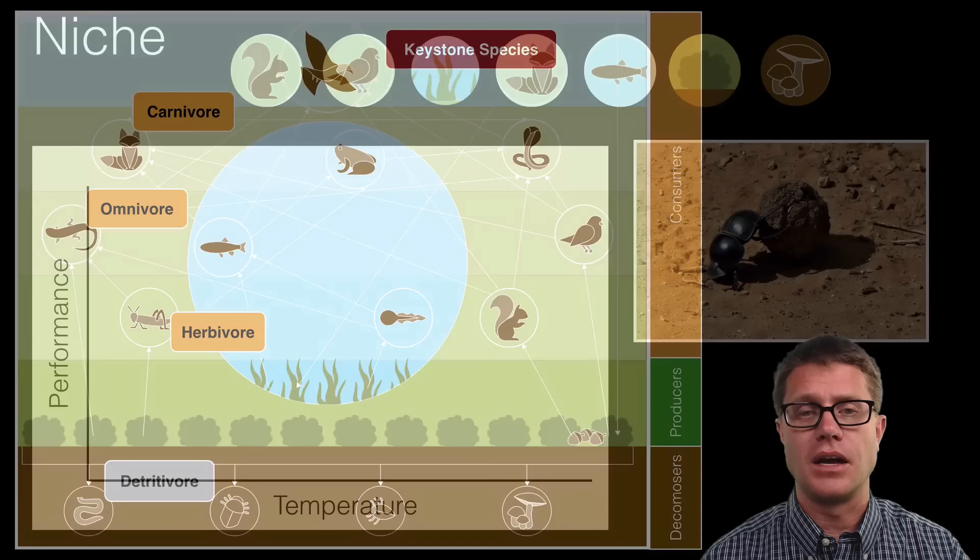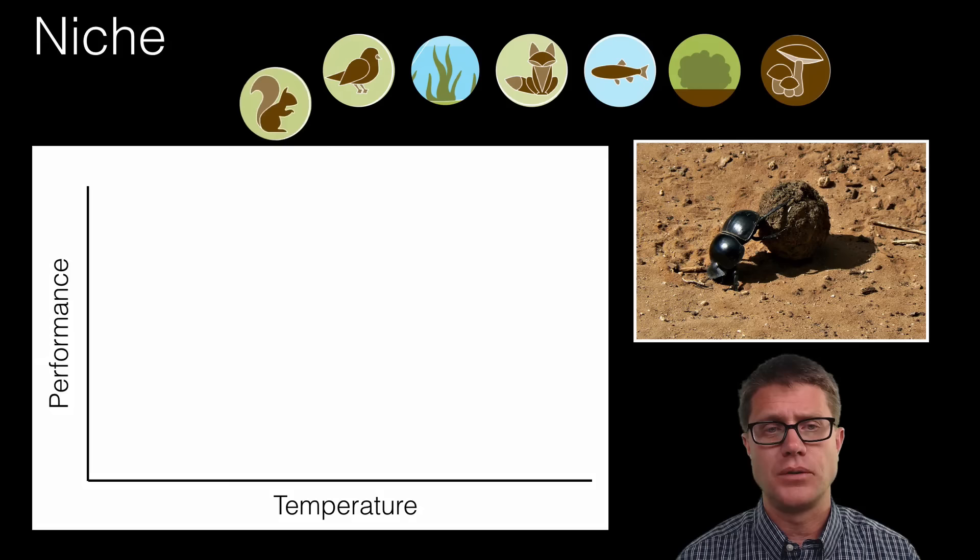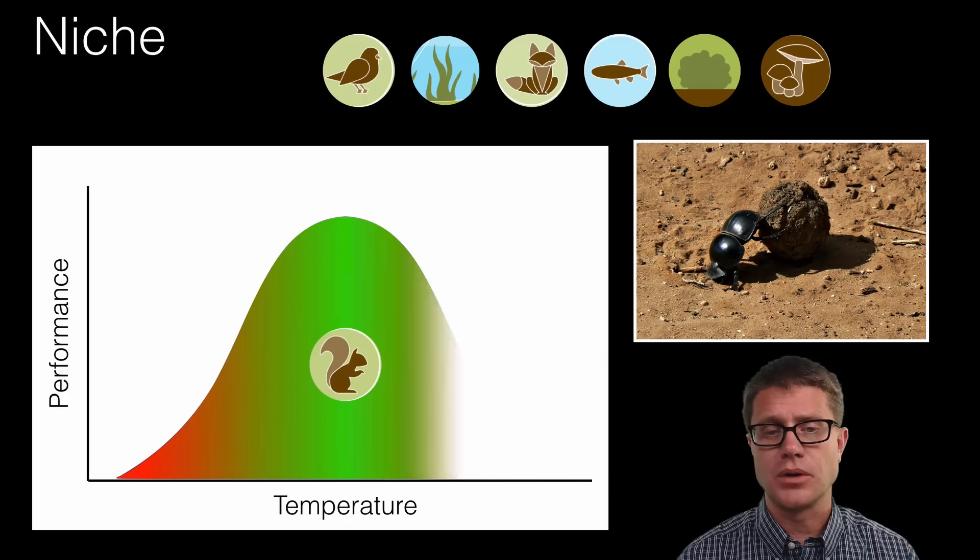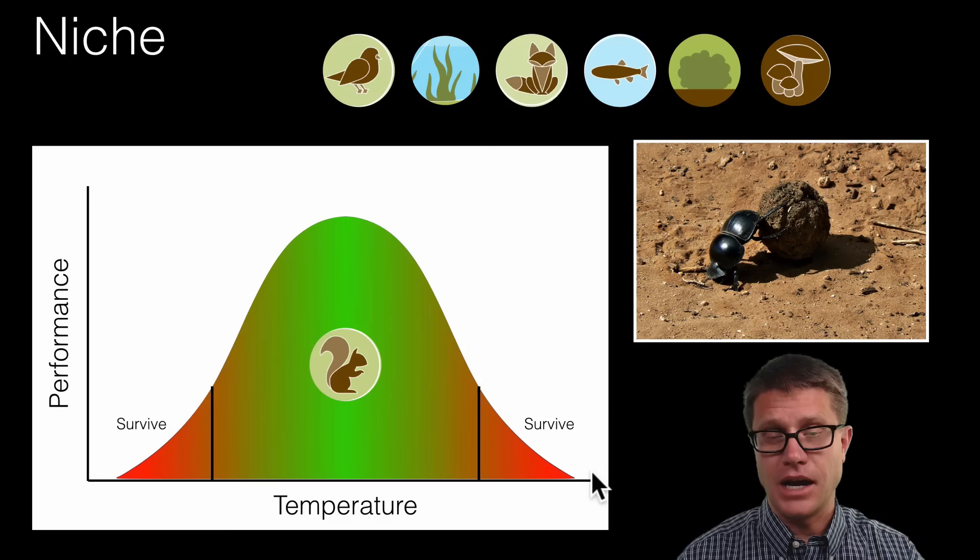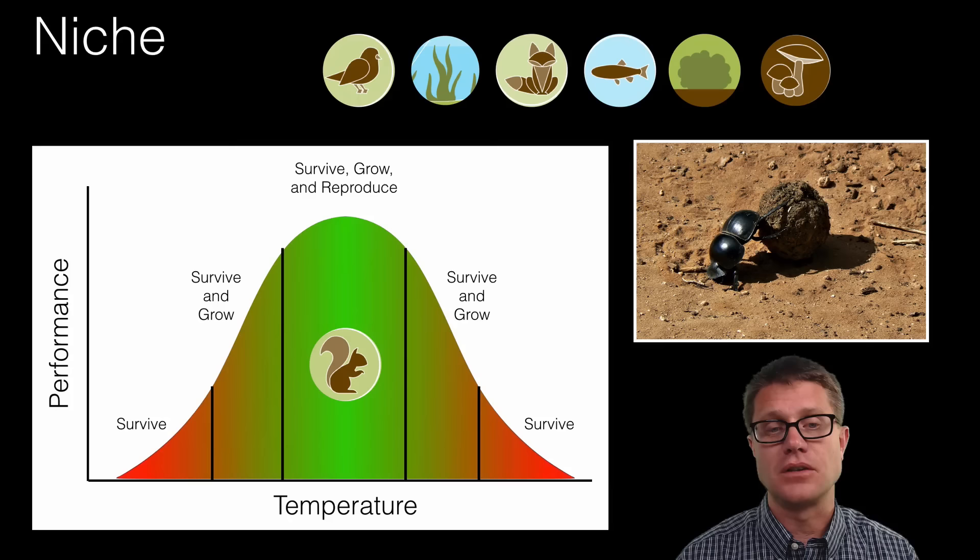What is the niche? Now we are at the level of an individual. So a niche you can think of as the job of an individual. If we take this squirrel and say how does the squirrel perform over different temperatures, we are going to get a distribution like that. There are going to be areas where it can survive. Outside that would be areas where it dies. As we move closer to the middle we get areas where it can survive and grow, and finally where it can survive, grow and reproduce. So the environment has a lot to do with the niche.